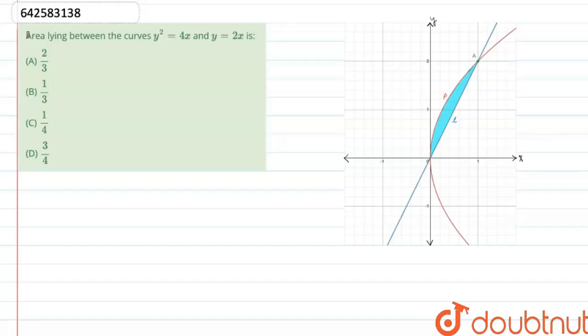Hello everyone. Let's start the question. The question says, area lying between the curves y² = 4x and y = 2x is: (A) 2/3, (B) 1/3, (C) 1/4, (D) 3/4.